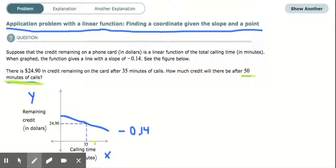Now what's important isn't that you get this precise but that you can make sense of this, right? Because if 50 minutes, you've been talking for 15 more minutes, there's going to be less credit left on the card, right? Less amounts of money left on it. So you know that your answer is going to be less than $24.90.